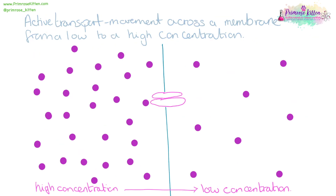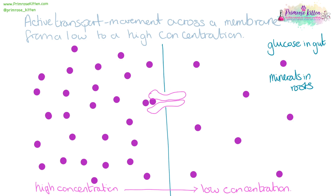Active transport is the movement across a membrane, but this time from a low concentration to a high concentration — against the concentration gradient. So our active transport channel is going to pick up something that it wants and move that through the channel to the other side. This could happen, for example, when we're talking about glucose in the gut or minerals in roots.